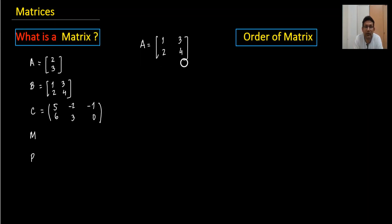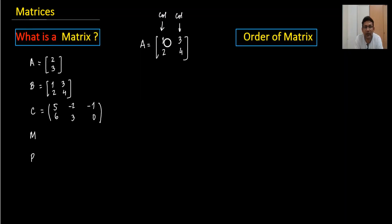Now let's understand columns and rows. Looking at our examples, if you count the vertical entries, those are the columns — one column, two columns, or three columns depending on the matrix. The horizontal entries are called rows. For example, the matrix [1, 2, 3, 4] has two rows and two columns.